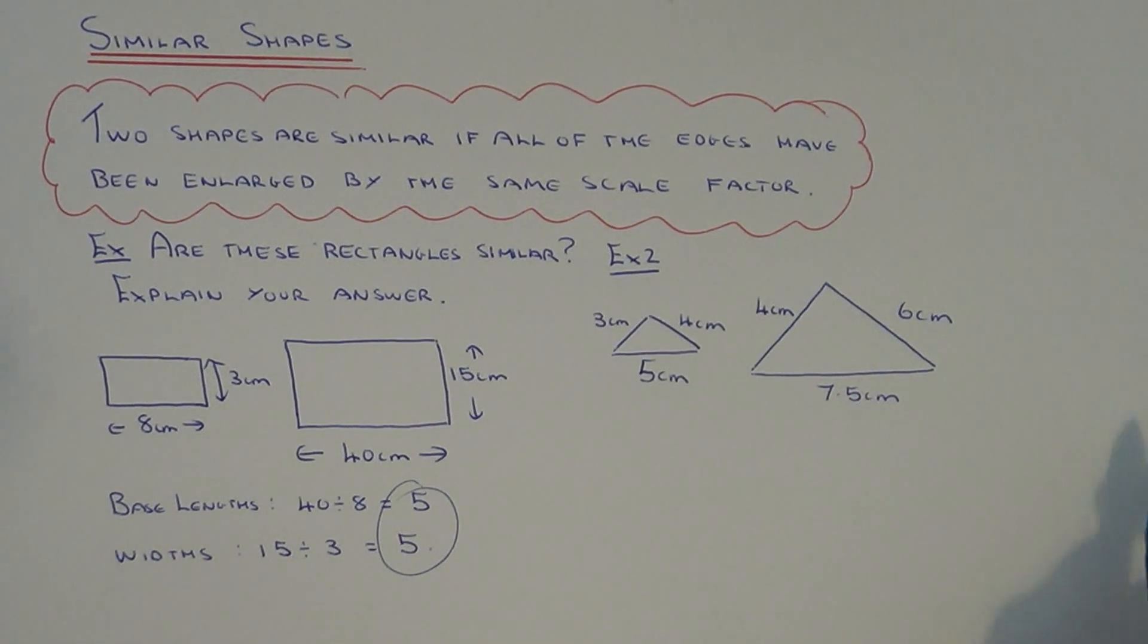Let's move on to example 2. We've got to decide if these two triangles are similar and explain the answer why. We've got a 3 by 4 by 5 triangle and a 4 by 6 by 7.5.